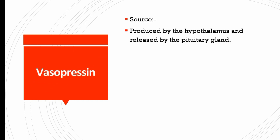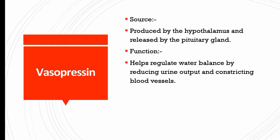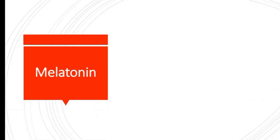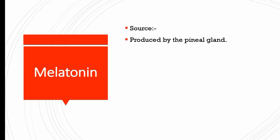Vasopressin is produced by the hypothalamus and released by the pituitary gland. Its function is to help regulate water balance by reducing urine output and constricting blood vessels. A lack of vasopressin can lead to excessive thirst and frequent urination due to water imbalance.